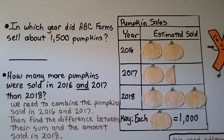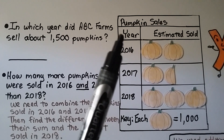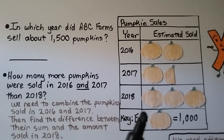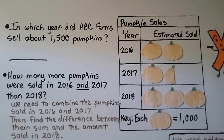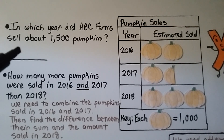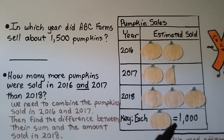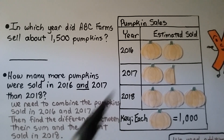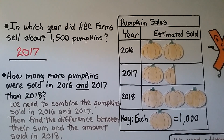Here we have a table of pumpkin sales by year, with the number of pumpkins sold. The key shows each pumpkin picture equals 1,000 pumpkins. The question asks: in which year did ABC Farms sell about 1,500 pumpkins? If each full pumpkin equals 1,000, then a half pumpkin equals 500 — so we look for one full and one half pumpkin, which is the year 2017.